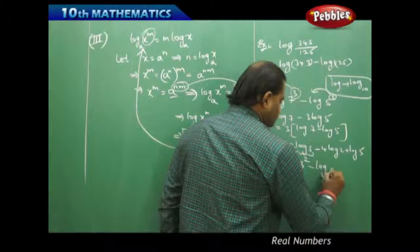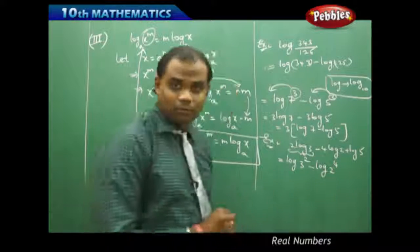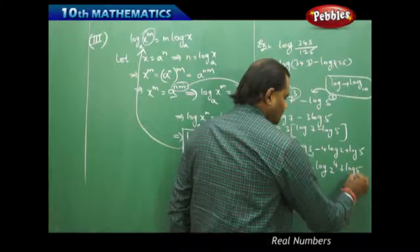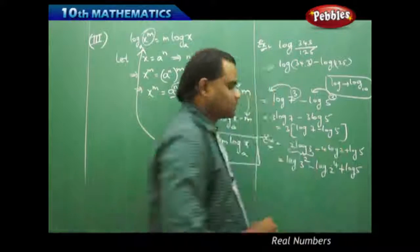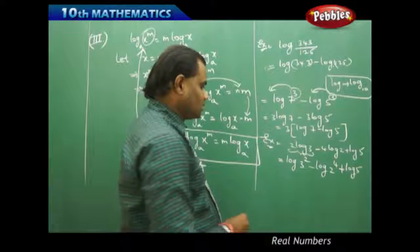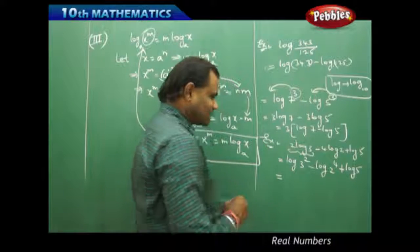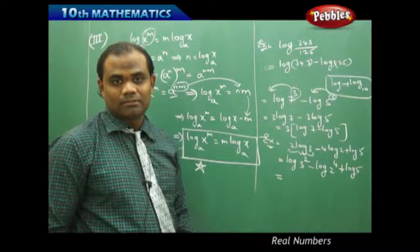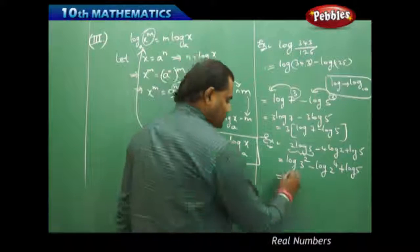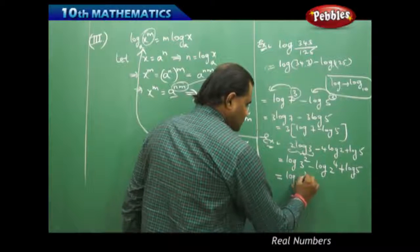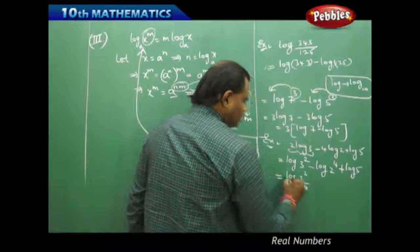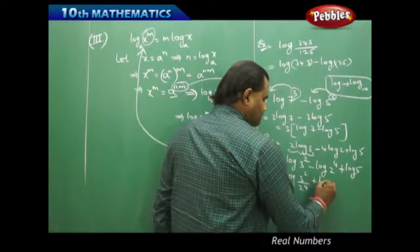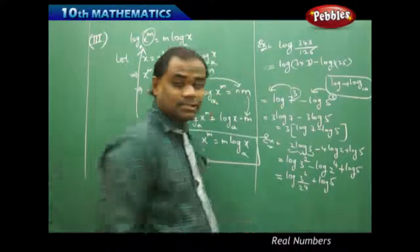If log x^m equals m log x, then m log x equals log x^m. Therefore 3 log 3 becomes log 3 squared, minus 4 log 2 becomes log 2 to the power 4, and log 5 remains as it is. This can be further simplified: log a minus log b equals log(a/b) by the second law of logarithm. Therefore this can be written as log(3 squared divided by 2 to the power 4) plus log 5.